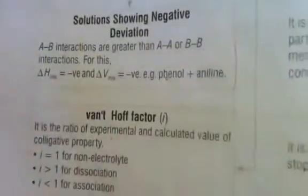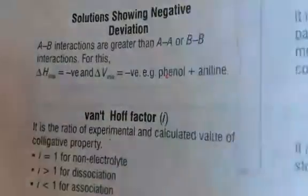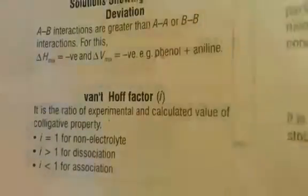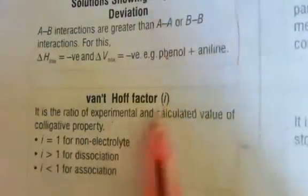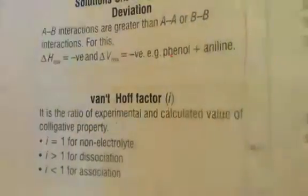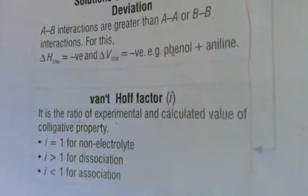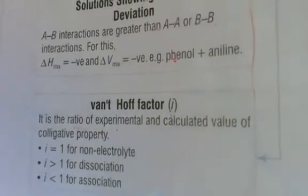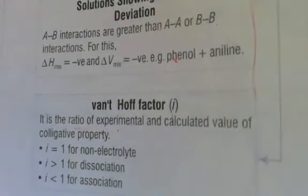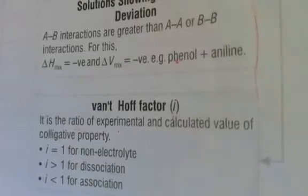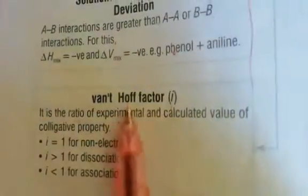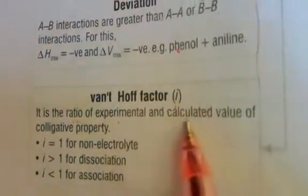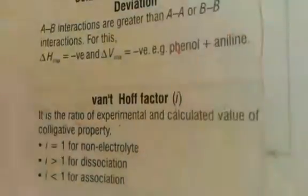After osmotic pressure, we talk about the Van't Hoff factor. It is denoted by i. It is the ratio of the experimental to the calculated value of a colligative property. As an analogy: if you have 10 toffees and lose 2, the ratio is 2/10. In the same way, i compares experimental and theoretical values.